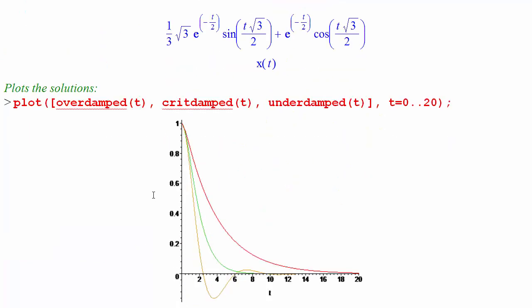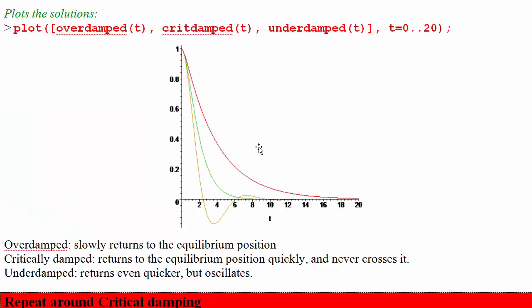Plot the solutions. Let's try plotting these three now that we've assigned them: over, critically, and underdamped looking like that. To analyze the motion a little bit it looks like the overdamped sort of slowly returns to the equilibrium position of zero.